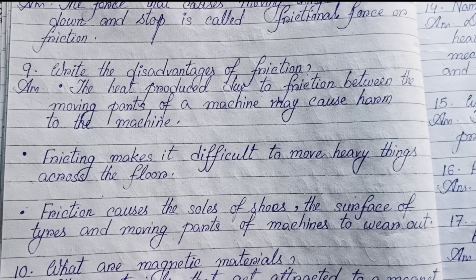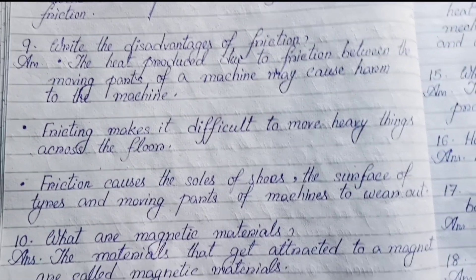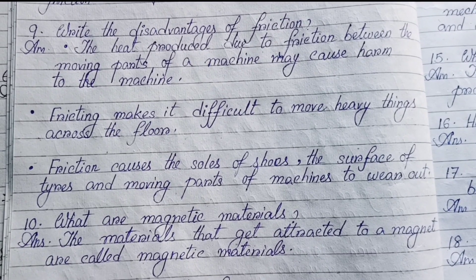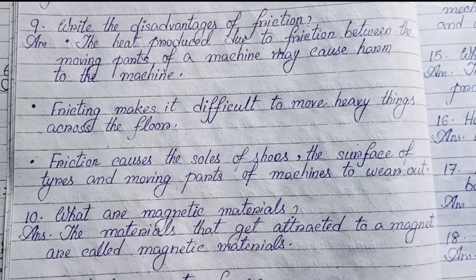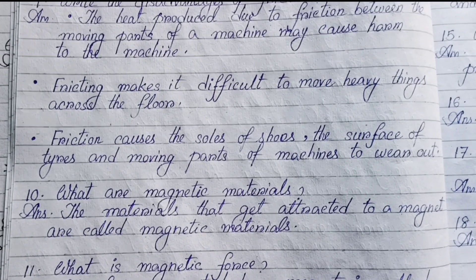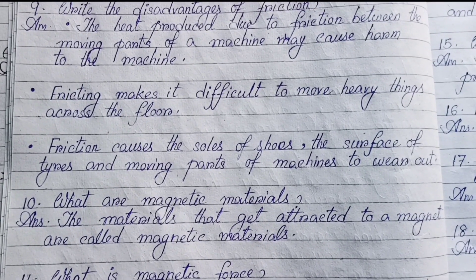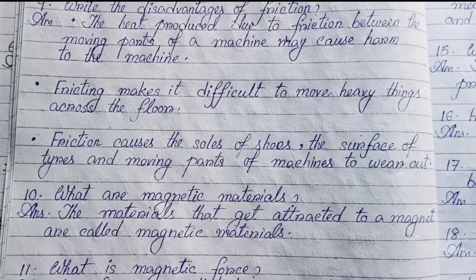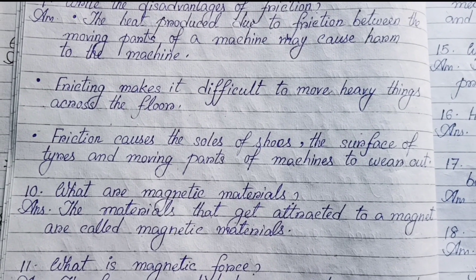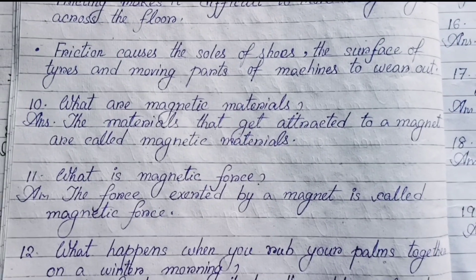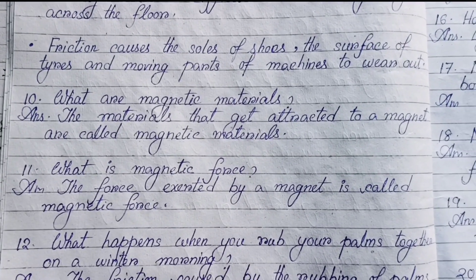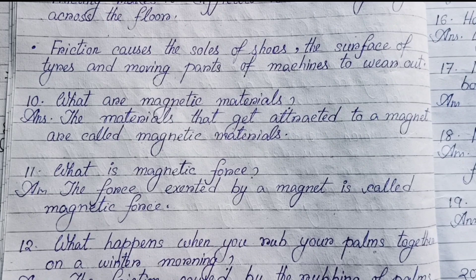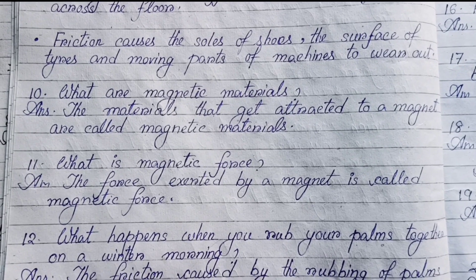Number nine: Write the disadvantages of friction. The heat produced due to friction between the moving parts of a machine may cause harm to the machine. Friction makes it difficult to move heavy things across the floor. Friction causes the soles of shoes, the surface of tires, and the moving parts of machines to wear out.